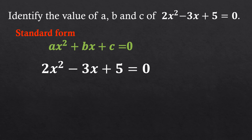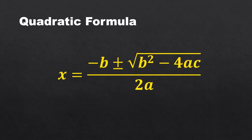Based on the given equation, it is already in standard form. The value of A is 2, the value of B is equal to negative 3, and the value of C is equal to 5. This is how you identify the values of A, B, and C in a quadratic equation.